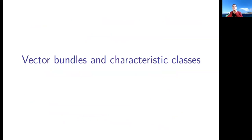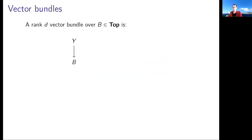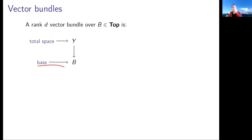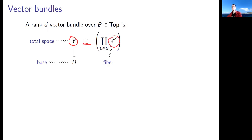Let me remind you what a vector bundle is. You fix a rank d, which is a natural number, and a topological space called the base. You consider continuous functions from some other topological space, called the total space, into b. For one of these to be a vector bundle of rank d, y as a set has to be in bijection with a disjoint union of Euclidean spaces R^d — the fiber.